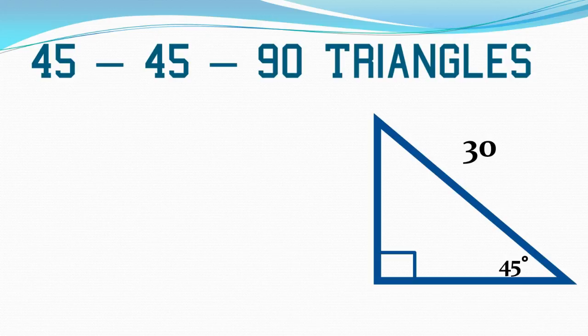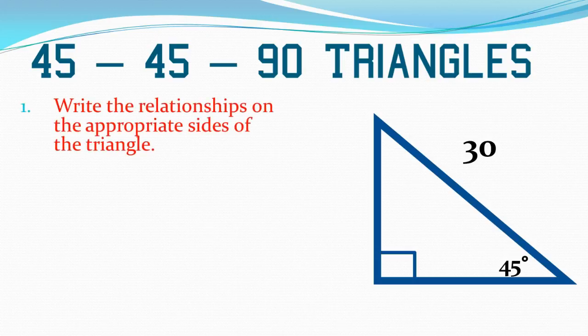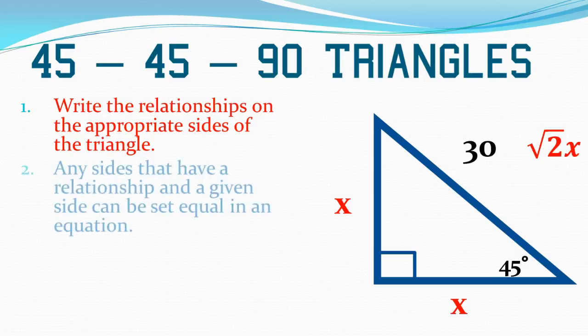The same policy is going to be put into account here if I know one of my sides is 30. Here I only know one of my angles is 45. The other automatically has to be 45. I start by writing out the relationships on the appropriate sides of the triangle. So I have square root 2x, x, and x. The two x's are always directly across from the 45 degrees. The square root 2x is always straight across from the 90-degree angle on the hypotenuse. Any sides that have a relationship and a given side can be set equal in an equation. 30 is a given side. Square root of 2x is a relationship. So I can set them equal to one another. And now I can solve this equation.